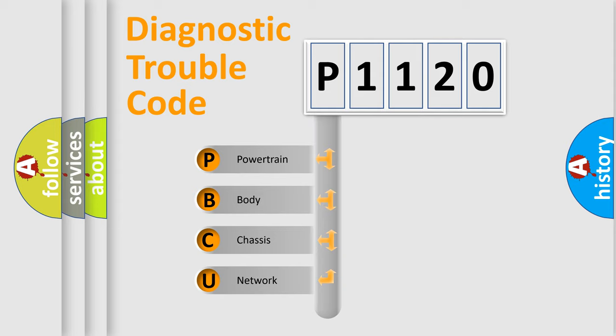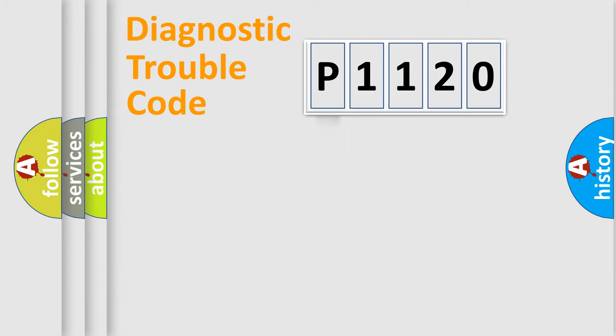We divide the electric system of automobile into four basic units: powertrain, body, chassis, and network. This distribution is defined in the first character code.